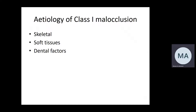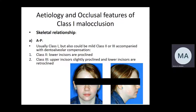Now we come to the etiology of class 1 malocclusion. When discussing etiology of any malocclusion, we go through skeletal, soft tissue, and dental factors in that order. For class 1 malocclusion, the skeletal factor in the anterior-posterior dimension is usually minimal — it's rarely an etiology because the anterior-posterior relationship is normally class 1. We might have some cases of mild class 2 or mild class 3 skeletal pattern where dental alveolar compensation camouflages the underlying skeletal pattern.